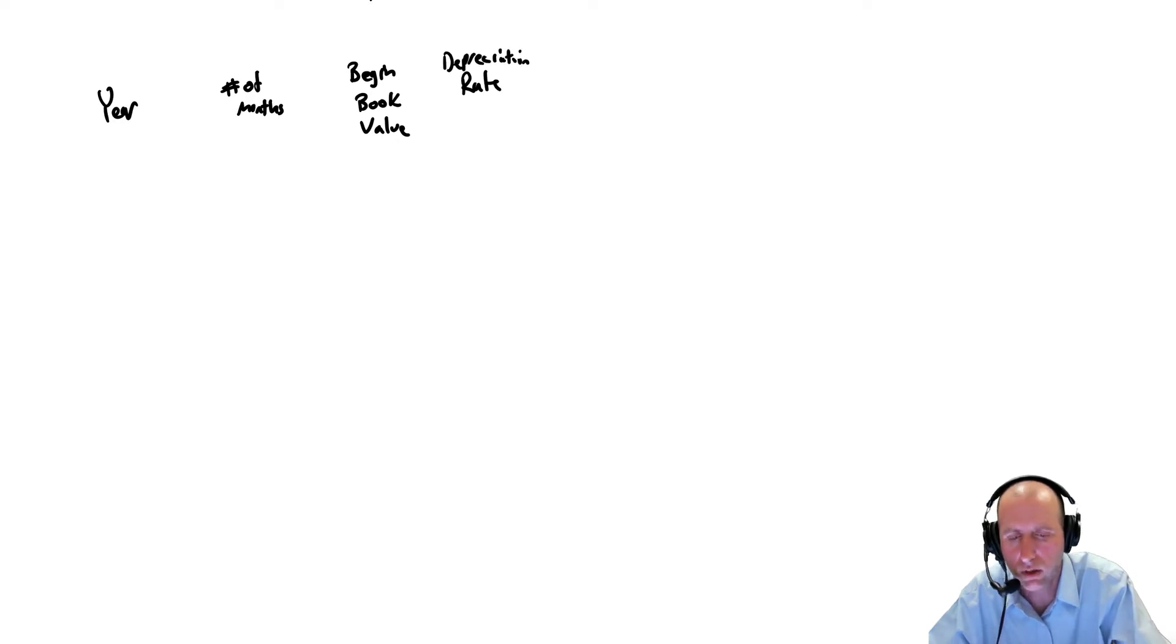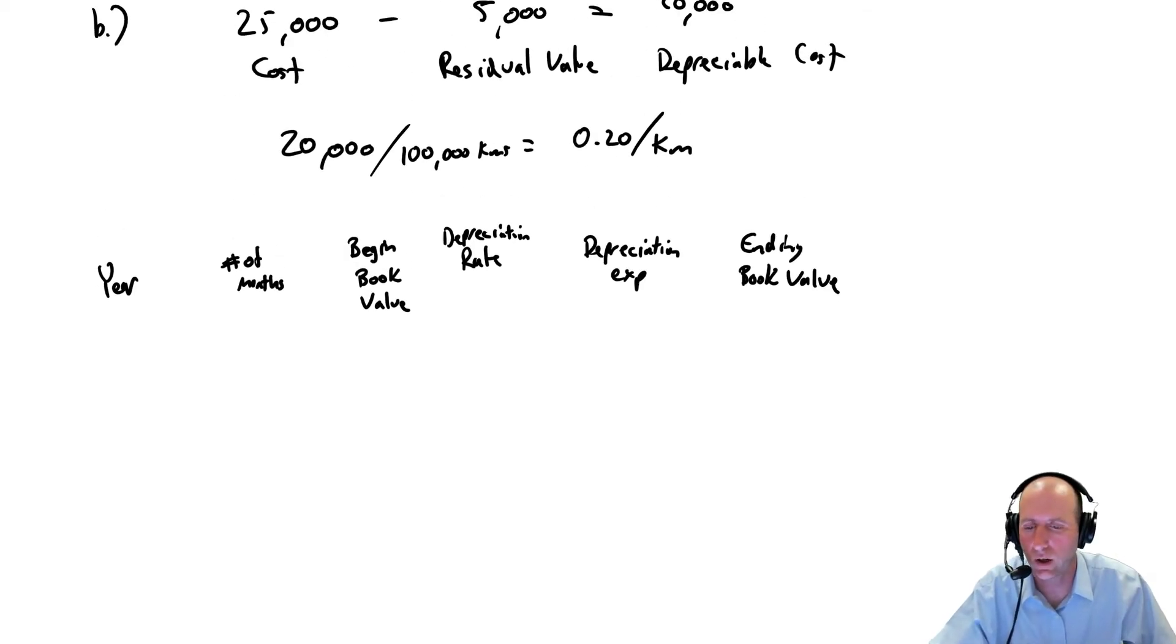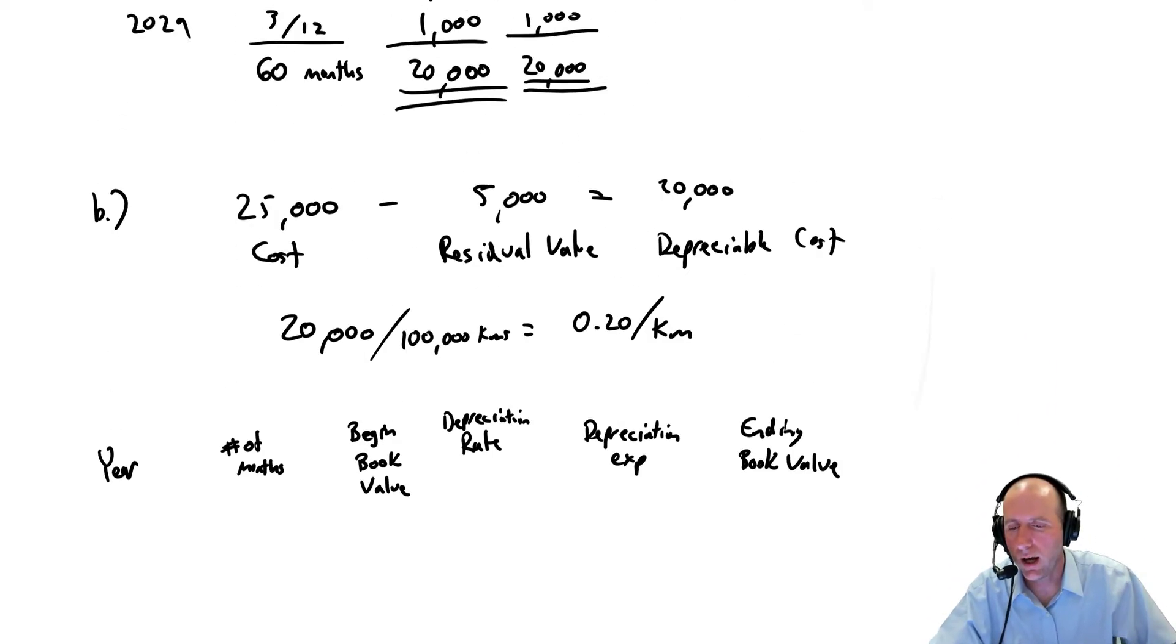So let's do that with our asset. To do it, we actually need to make a little table, a chart. We're going to have year here, and number of months, just as we've kind of done before.